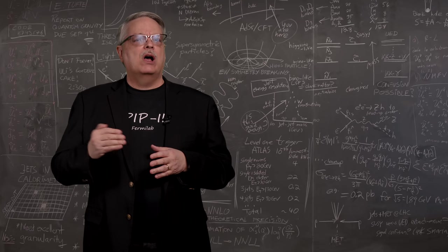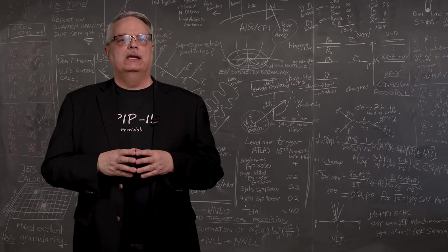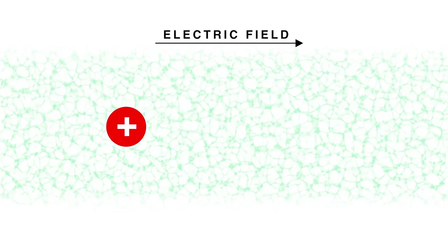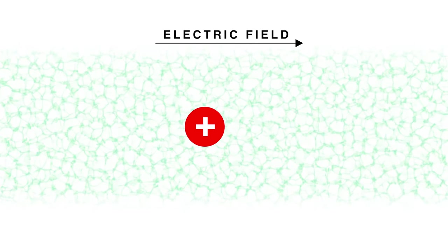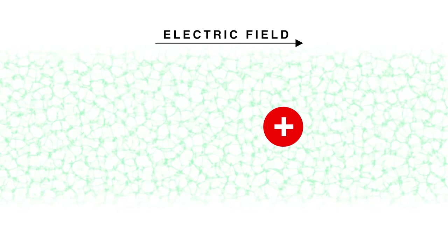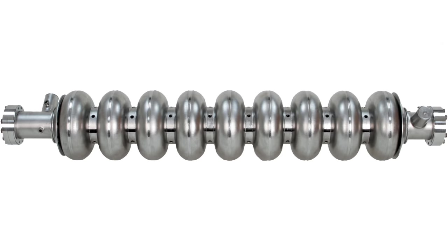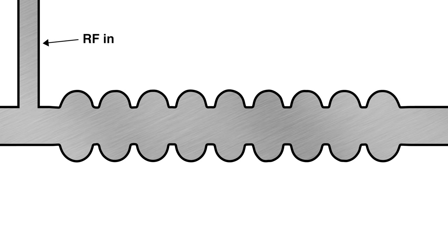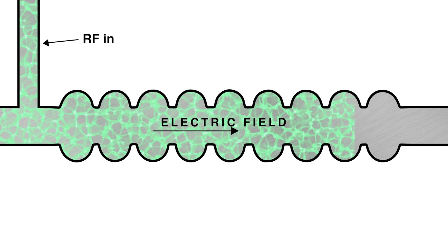Particle accelerators all work more or less in the same way. Strong electric fields are used to push electrically charged particles and make them go faster and faster. Radio waves are beamed into devices called cavities. When the radio waves enter the cavities, they make extremely strong oscillating electric fields.